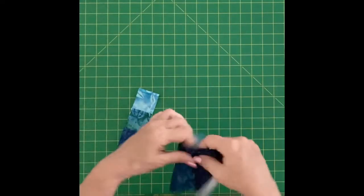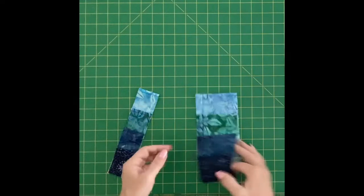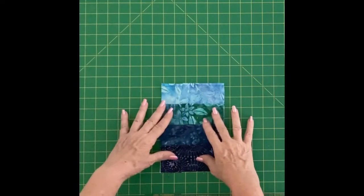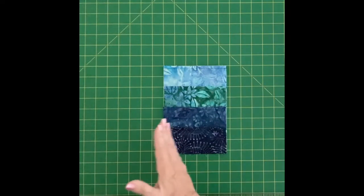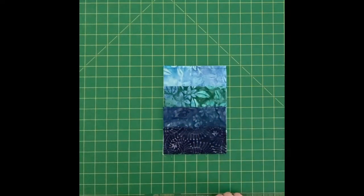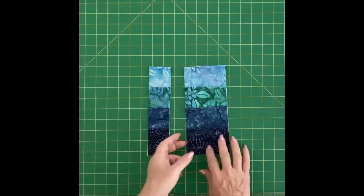So here I have this sewn into a tube, and we're going to pretend that this part is still on there. And then we're going to be cutting these strip sets into two-inch wide strips.